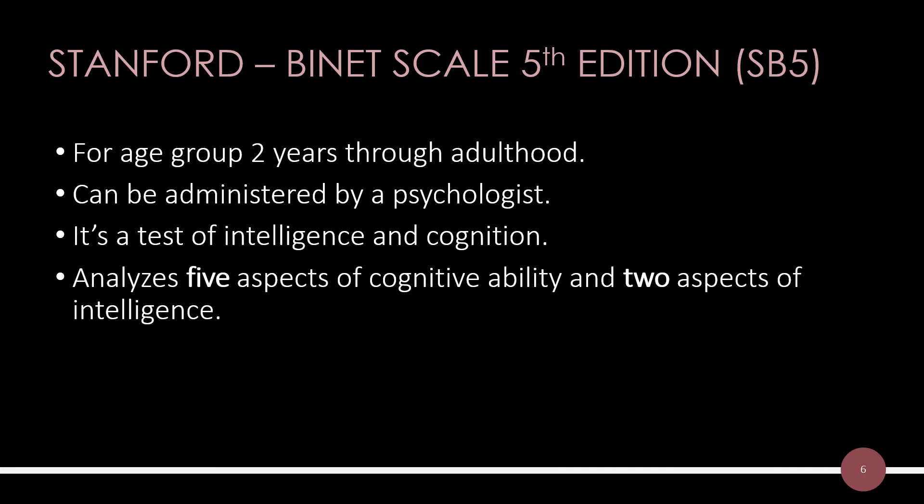Let us study the Stanford-Binet Scale 5th edition in more detail. This test is also called SB5. It can be administered to individuals from 2 years of age through adulthood. This test can be administered by a trained professional, preferably a psychologist. This edition is a test of intelligence and cognition, and it analyzes 5 aspects of cognitive ability and 2 aspects of intelligence.